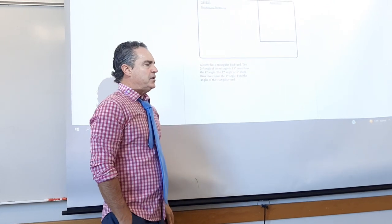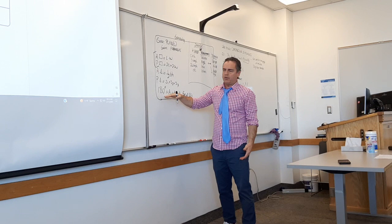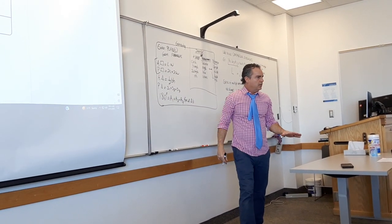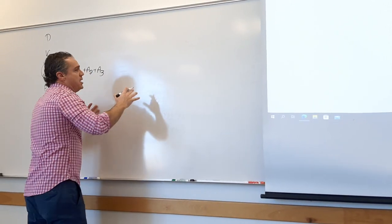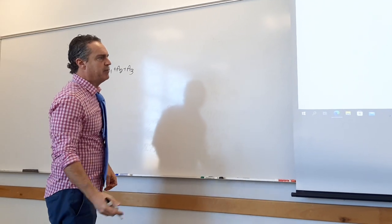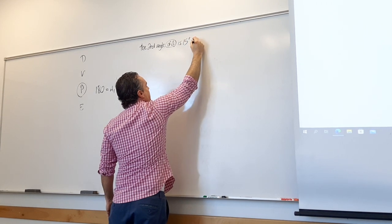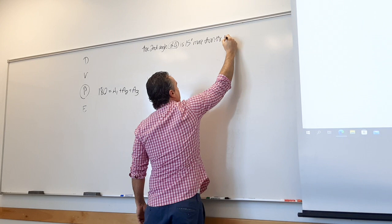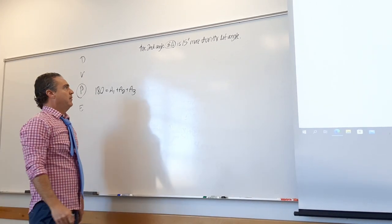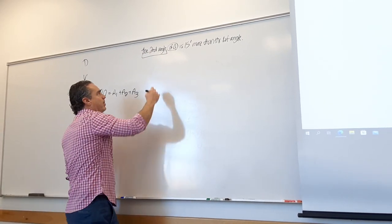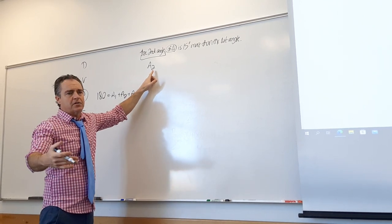The second angle of the triangle is 15 degrees more than the first angle — that's a comparison statement. Anytime they're comparing one thing to another, write it out and drop-down translate it. The second angle, A2. 'Of a triangle' is a prepositional phrase — circle it, get rid of it. 'Is' means equals. '15 degrees more' means plus 15. 'Than the first angle' is A1. So A2 = A1 + 15. Subscript means underwriting — A-sub-2 means my second angle.